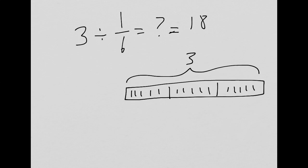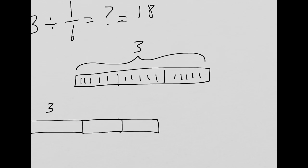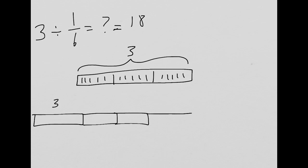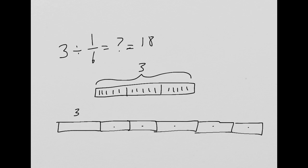There's another way to think about this problem, though. Just like with multiplication, if we said three times 1/6, it's 1/6 of three. When we do three divided by 1/6, we could also be saying three is 1/6 of what number? So if we have our three here, and two, three, four, five, six, well, then we have three, six, nine, twelve, fifteen, eighteen. Again, it shows us that this equals eighteen.